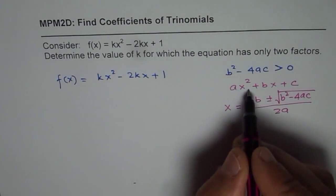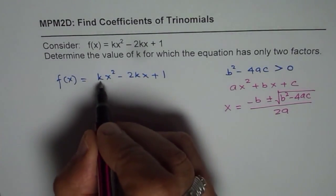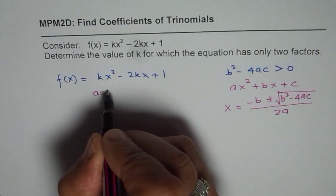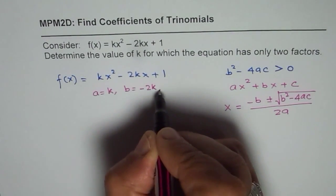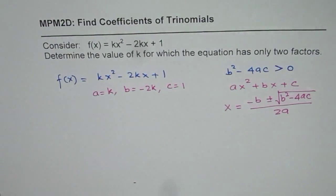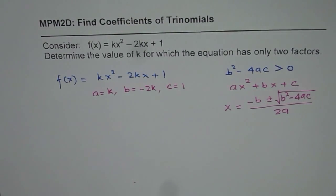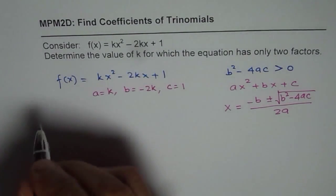So if we compare it with the standard form we know A equals k, B equals minus 2k, and C equals 1. So now let us see what is B squared minus 4ac.